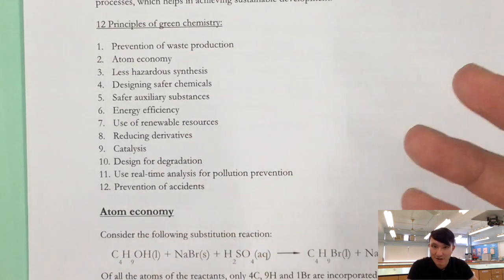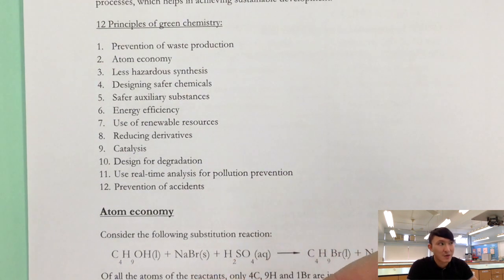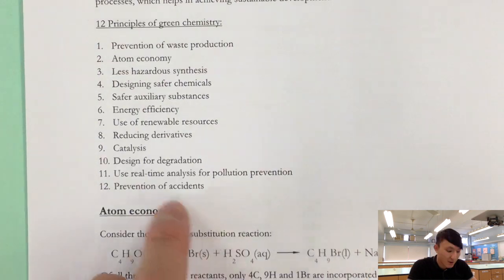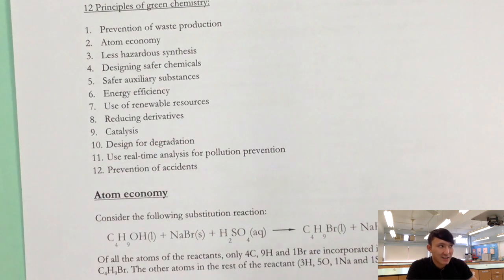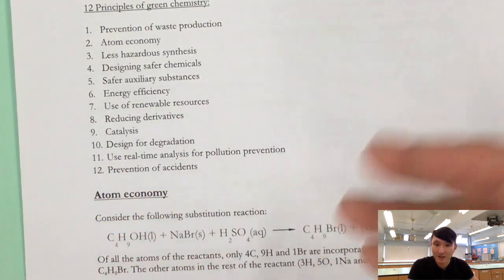We try to minimize the use of derivatives because the use of these derivatives may often cause pollution to the environment. Number nine, catalysis. Catalysis of course can speed up the reaction. While the catalyst is not being consumed we do not need to constantly replace or replenish the catalyst. That definitely greens the process.